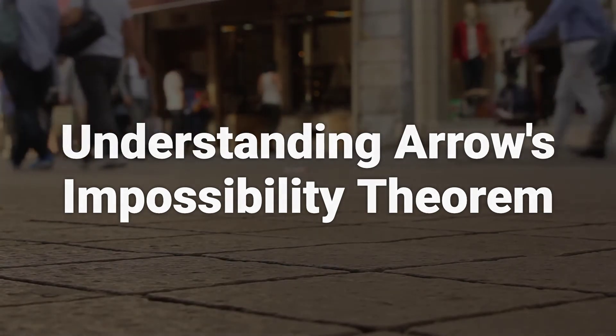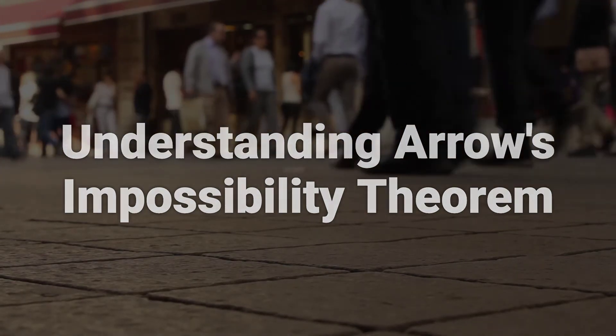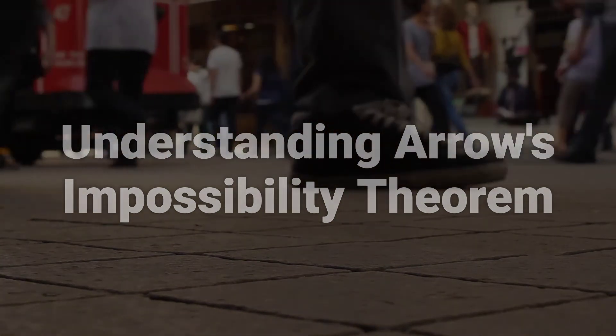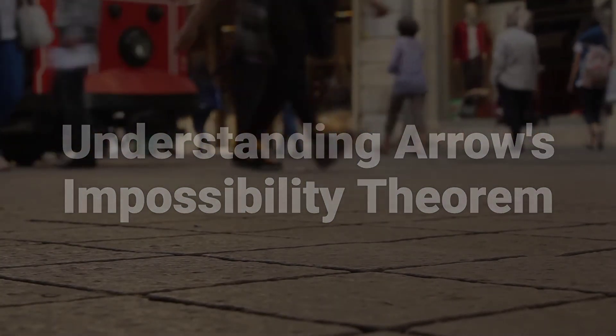Arrow's impossibility theorem, part of social choice theory, is an economic theory that considers whether a society can be ordered in a way that reflects individual preferences.